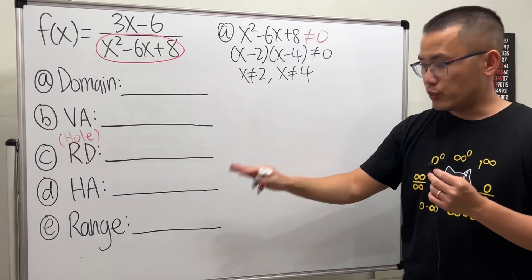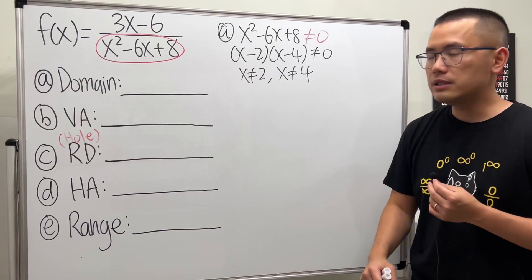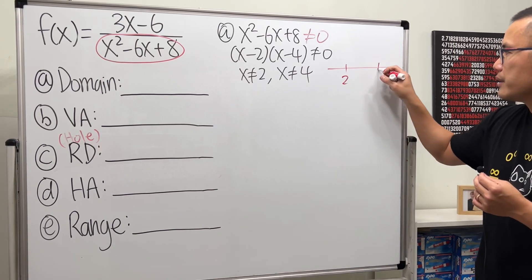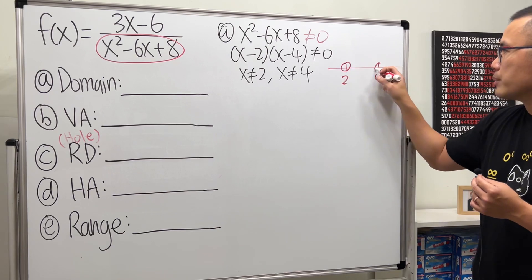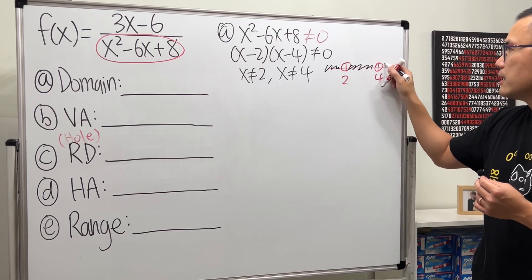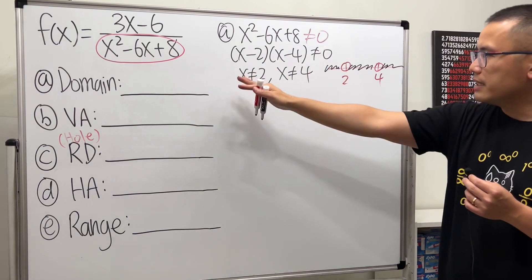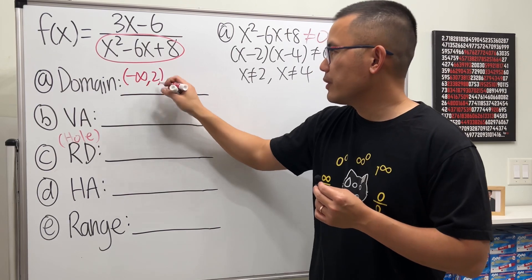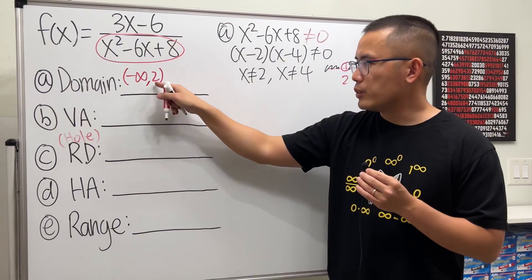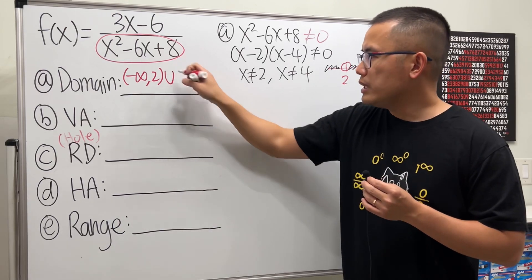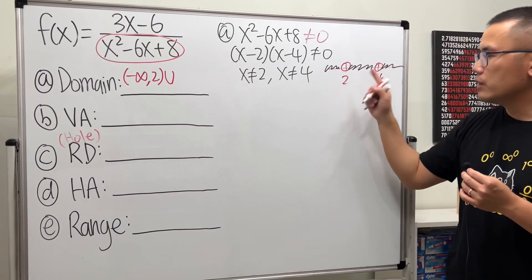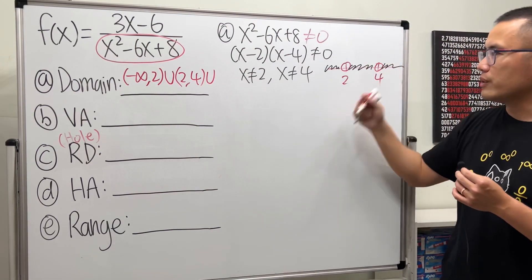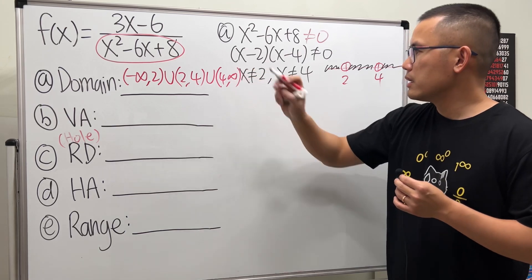Usually for domain and range, we like to write the answer in interval notation. To do so, look at a number line real quick. Let's say here is 2 and here is 4. We do not want these numbers, but anything else is okay. So for the first interval, we have negative infinity up to 2. Use parentheses to show that we are not including the end numbers. And then union, because we have another piece from 2 to 4. Do not include the 2, do not include the 4. Lastly, union 4 to infinity. Done deal.